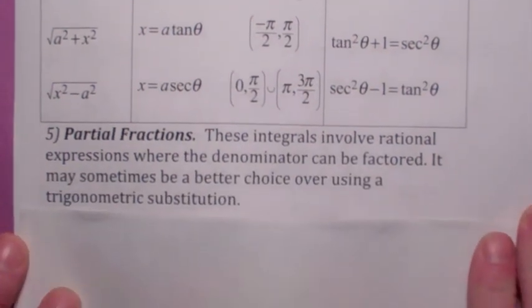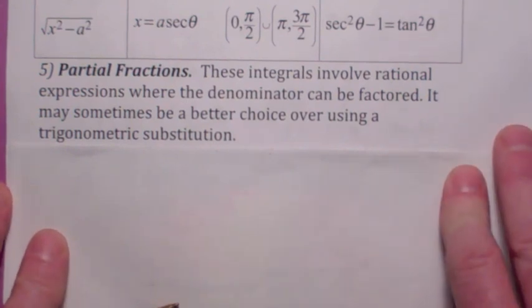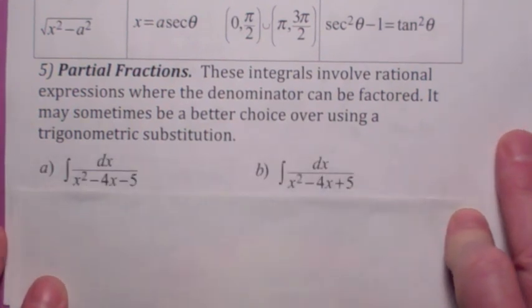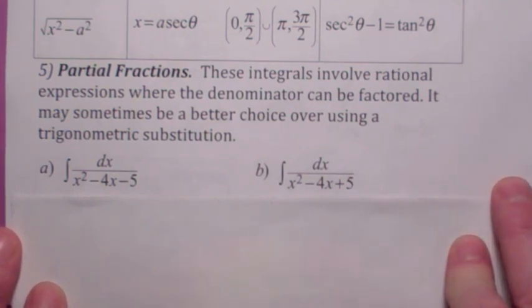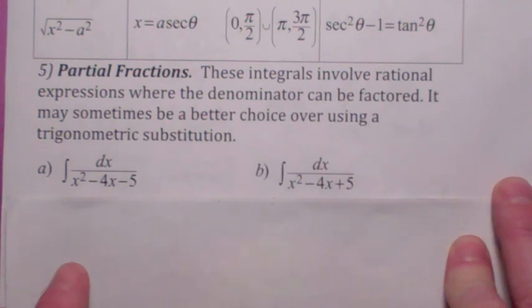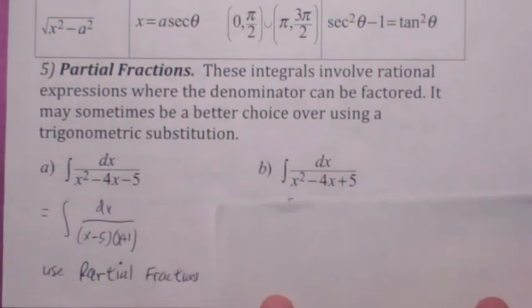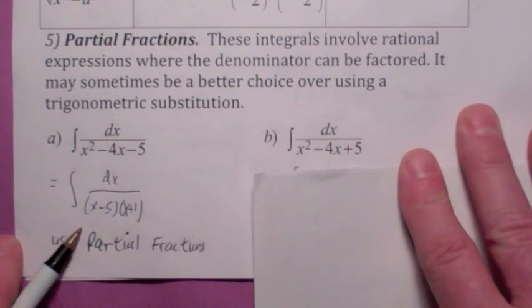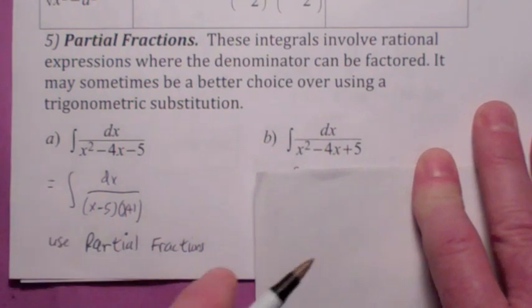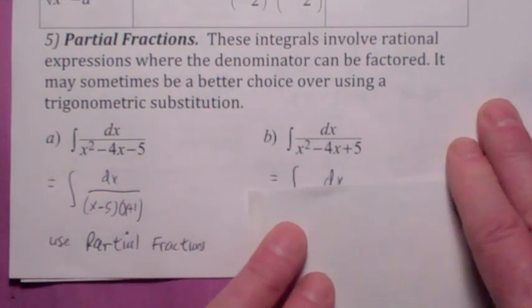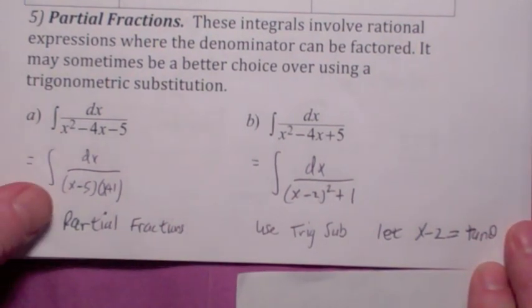Partial fractions. Partial fractions is used whenever you have a rational expression. Now, there's going to be sometimes when you can use partial fractions, and sometimes when you can't. Look at these two examples. This first one, you can factor this, so I would suggest on this first one to factor, and I would use partial fractions instead of a trig substitution. But on the second one, since you can't factor it, then you would have to complete the square on the bottom and use a trig substitution. You'd let x minus two equals tangent theta, I believe.